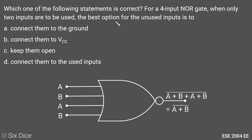Although Options A and D give the same output, we need the best option. In Option D, the unused inputs are tied to the used inputs, so their voltage changes with the input signal, meaning current supplied to the NOR gate also changes — causing energy loss. But in Option A, connecting unused inputs to ground means no voltage change, no current flows into those inputs, and no energy is wasted. Therefore, Option A is the best option and is the correct answer.